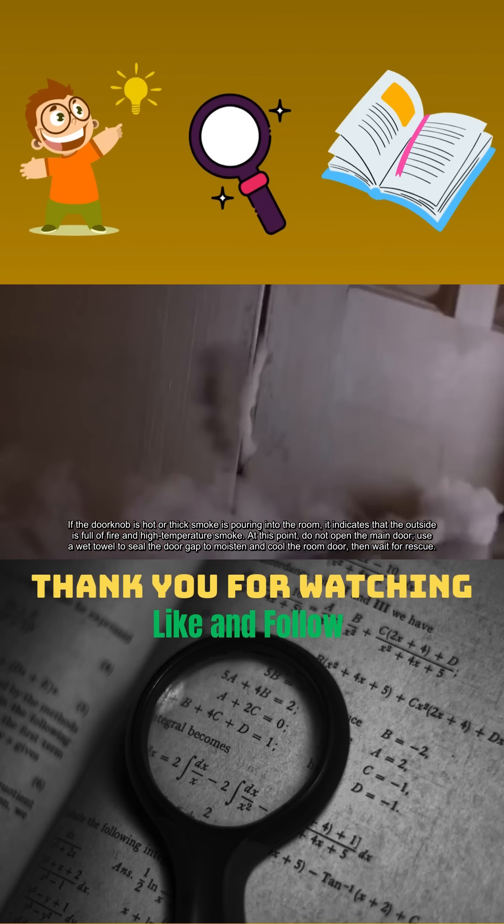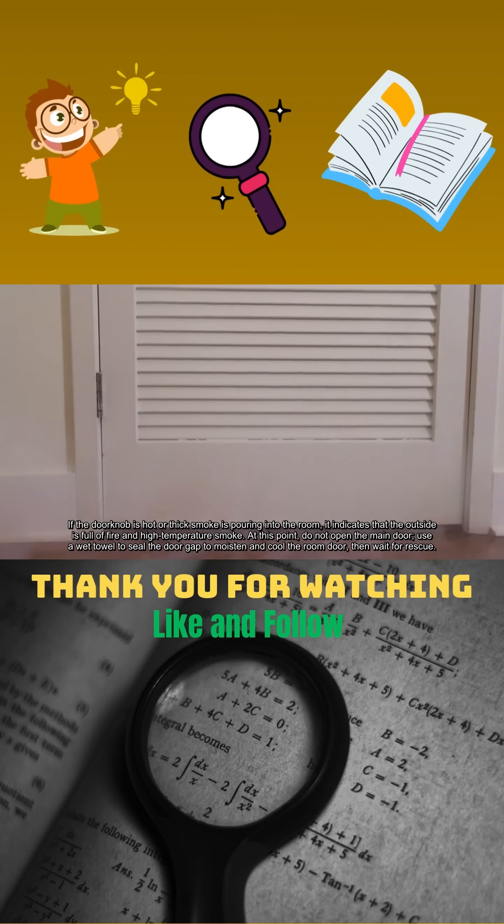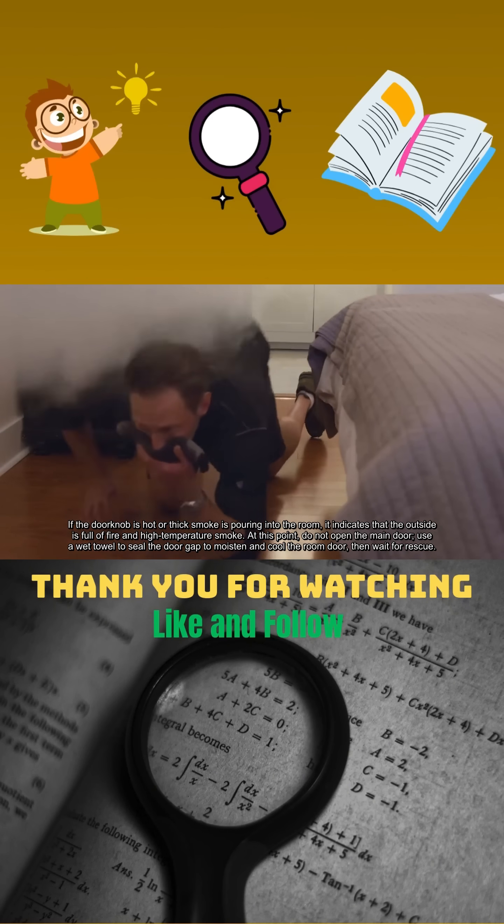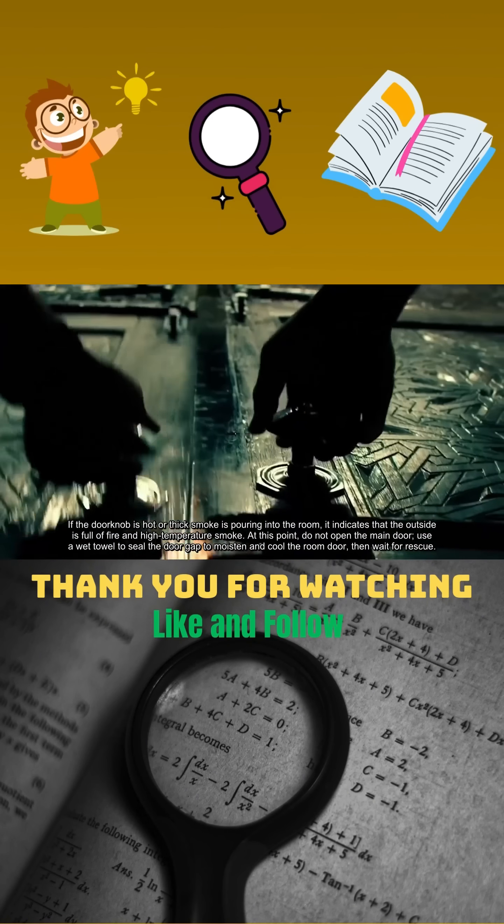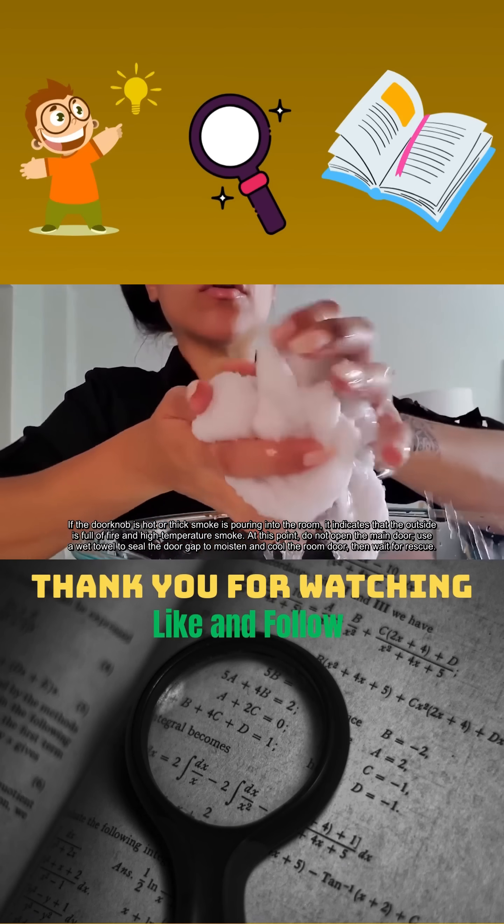If the doorknob is hot or thick smoke is pouring into the room, it indicates that the outside is full of fire and high temperature smoke. At this point, do not open the main door. Use a wet towel to seal the door gap to moisten and cool the room door, then wait for rescue.